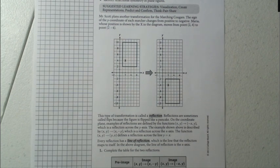This type of transformation is called a reflection. Reflections are sometimes called flips because the figure is flipped like a pancake. On the coordinate plane, examples of reflections are defined by the functions (x, y) goes to (-x, y), which is a reflection across the y-axis.